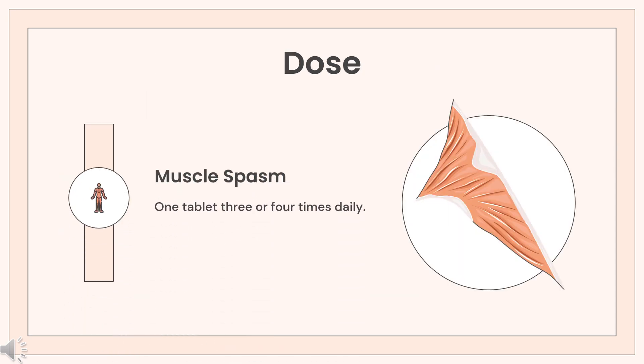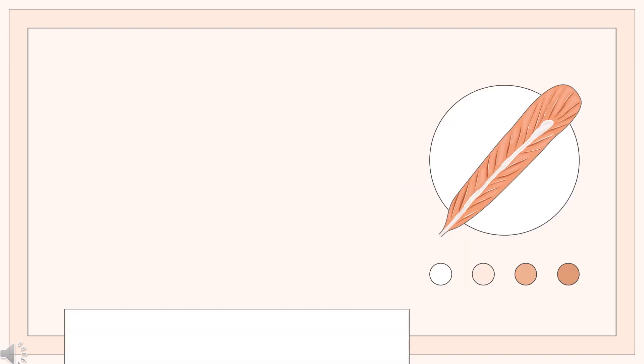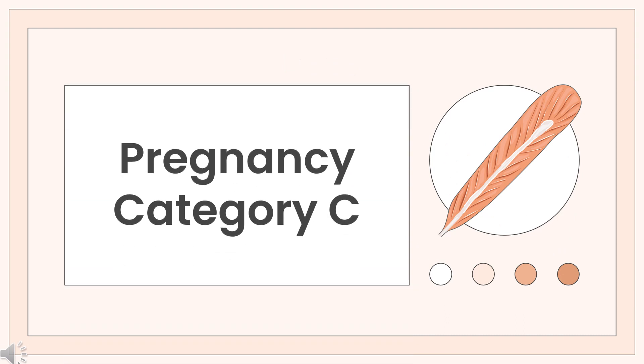Dose: One tablet three or four times daily. If adequate response is not obtained with this dose, it may be increased to one and one-half tablets (750 mg) three or four times daily. As improvement occurs, dosage can usually be reduced.